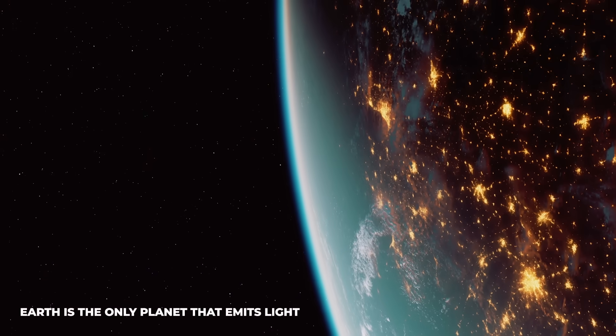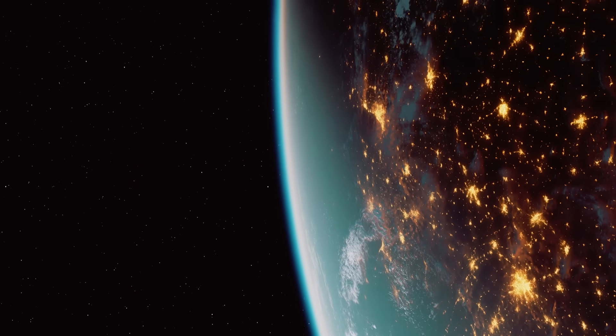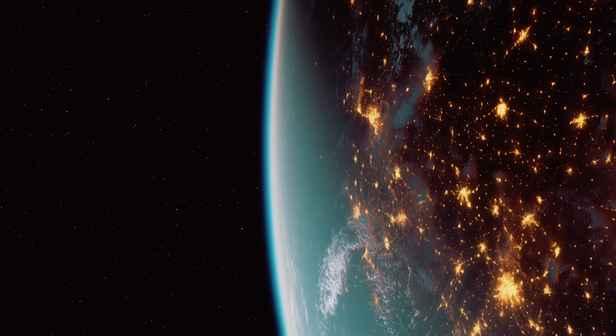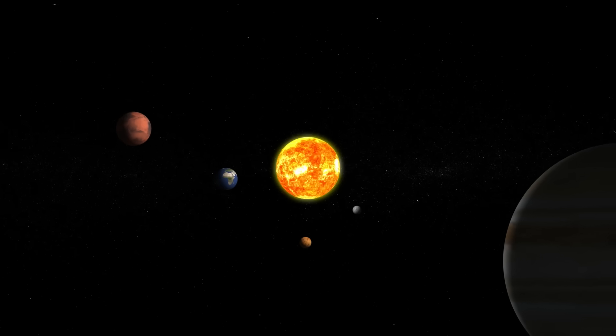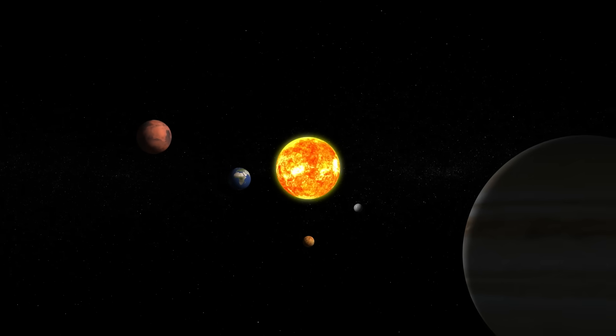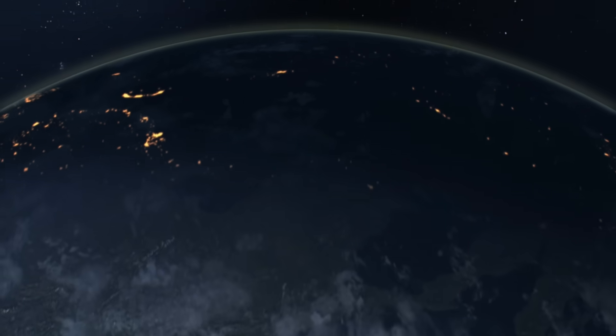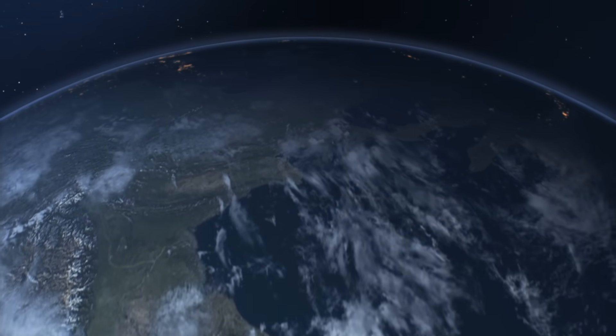Earth is the only planet that emits light. Although we were taught at school that planets do not emit light, the Earth breaks this rule. Unlike the other worlds of the solar system, which remain in complete darkness on their night side, our planet emits artificial light, visible even from space.